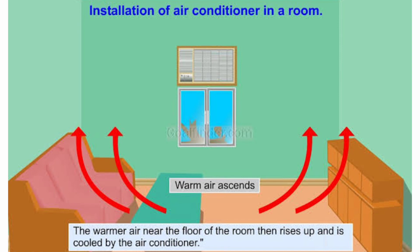Air conditioners are installed near the roof. The cool air moves down and the warm air near the surface of the room rises up, thereby setting up convection currents which cool the whole room effectively.